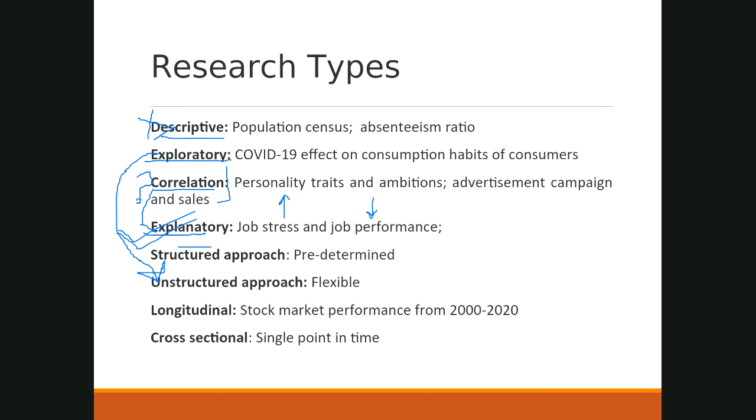Explanatory research goes further than correlational research. It not only identifies the association between two aspects of a situation, but also explains why that relationship exists. For instance, if high job stress leads to low job performance, explanatory research asks why that relationship holds. The 'why' question is not answered in correlational research, which is why I recommend explanatory research. Correlational research is acceptable only when the situations being studied are extremely novel.